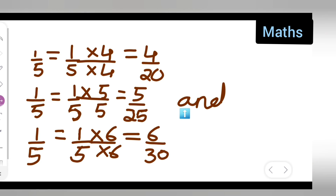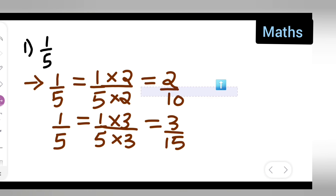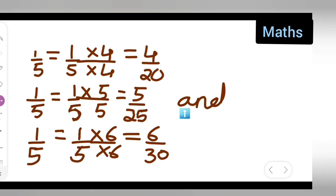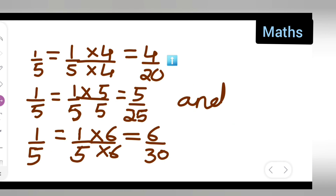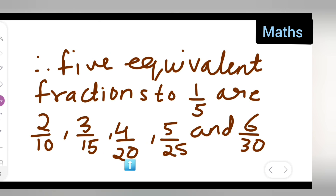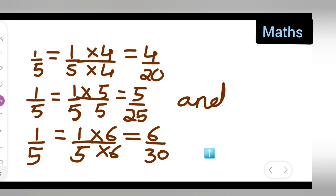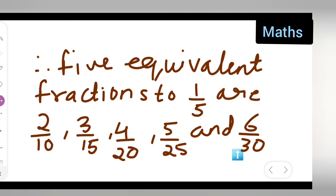So these are the 5 equivalent fractions of 1 upon 5: 2 upon 10, 3 upon 15, 4 upon 20, 5 upon 25, and 6 upon 30. I hope you all have understood today's question. Thanks for watching — if you have any queries or doubts, comment below. Don't forget to like, subscribe, and share with your friends.